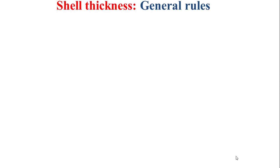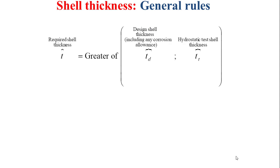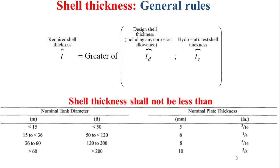First, some general rules should be taken into consideration when calculating the shell thickness. The required shell thickness, denoted by t, should be the greater of the design shell thickness including any corrosion allowance, denoted by td, and the hydrostatic test shell thickness, denoted by tt. Also, the shell thickness shall not be less than the minimum values indicated in the table shown, as a function of the nominal tank diameter.